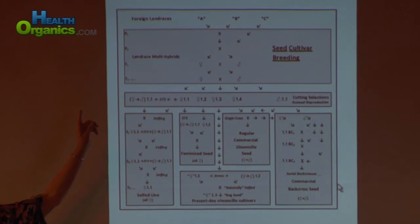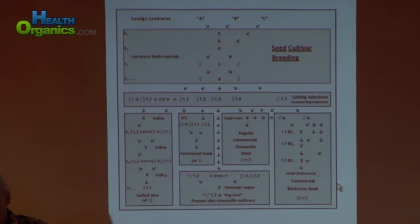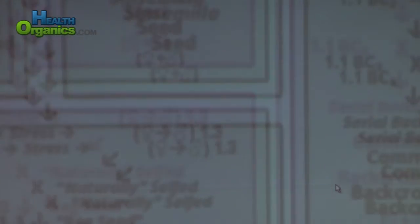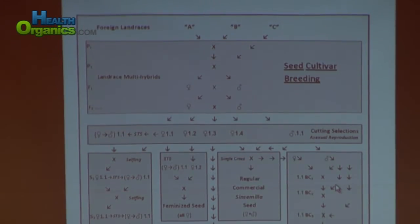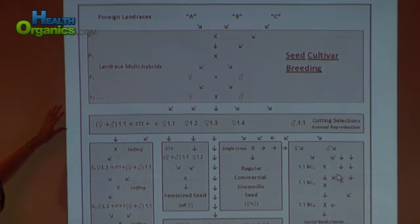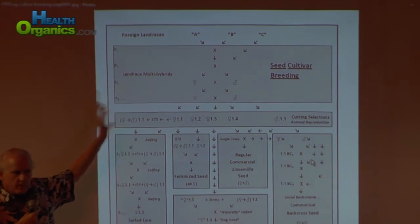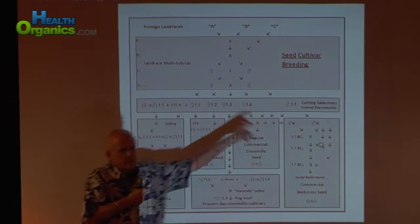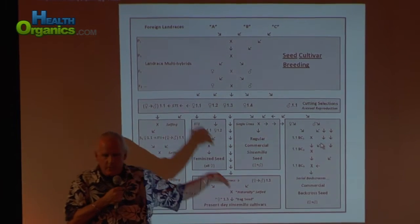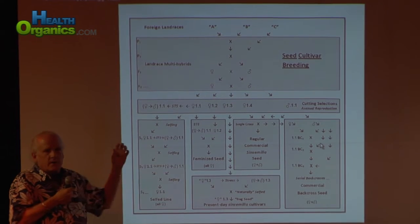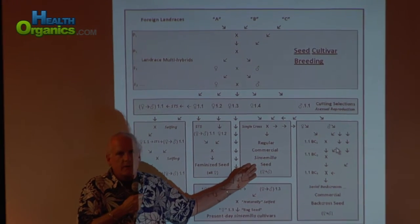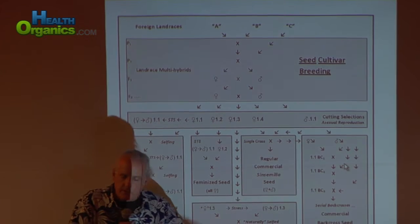We start with foreign landraces A, B, and C. We cross A and B, then the next generation cross C — because you had a Mexican, then a Colombian, and then somebody brought a Thai the next year and threw it in the mix. These are landrace multi-hybrids, still involving landraces. Then from this, we did cutting selections: females one through four and a male 1.1. If you cross a male and female, you get what we call regular commercial seed — what all seed companies starting in the Netherlands sold.